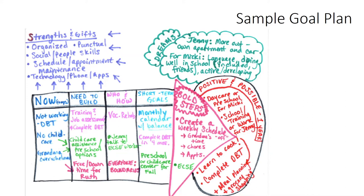Ideas for who to enroll or reach out to included vocational rehabilitation, an early childhood special education worker, and working on boundaries within the family. The short-term goals for Jenny were to have a monthly calendar with balance, to complete DBT in the next four months, and to have preschool or child care arranged for the fall. The meeting ended with bold steps: Jenny would create a weekly schedule that included grandma's time off, taking care of Mickey for at least one night a week, building chores into the schedule, and making appointments for job assessment and child care options.